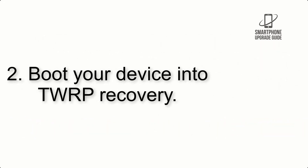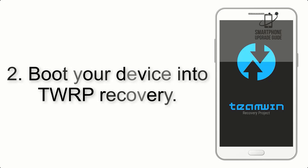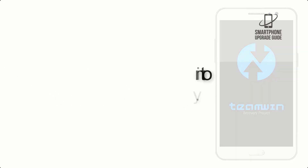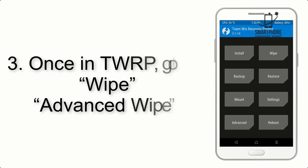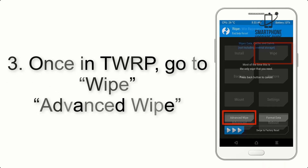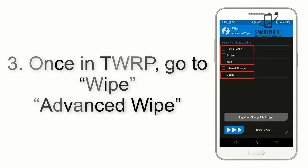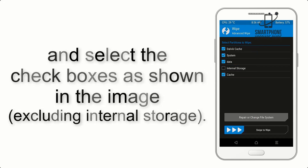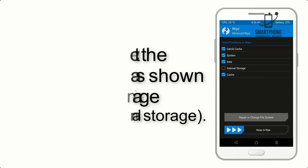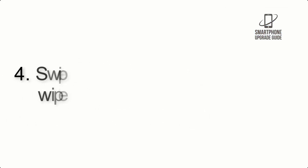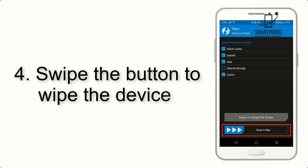Step 2: Boot your device into TWRP recovery. Once in TWRP, click on Wipe, then Advanced Wipe, and select the checkboxes as shown in the image, excluding internal storage.